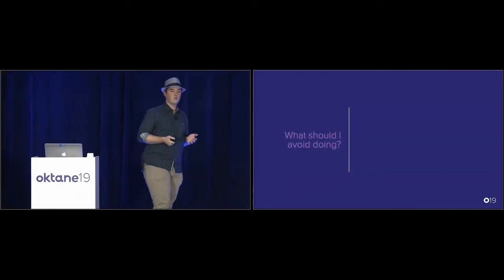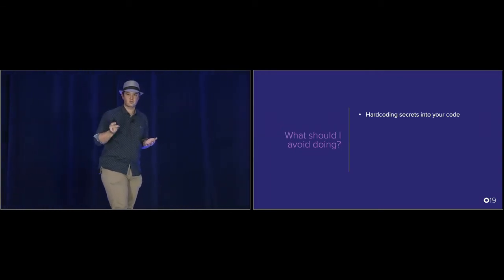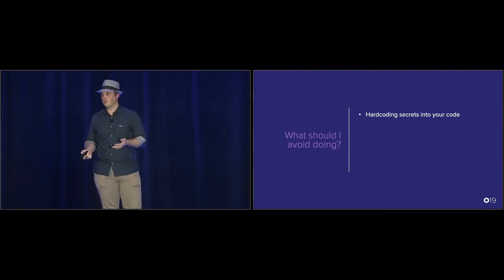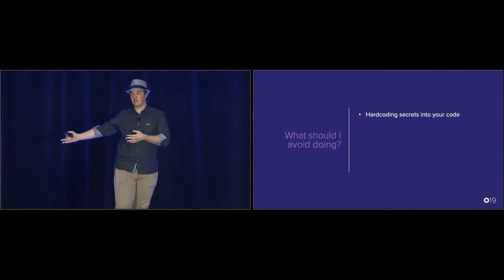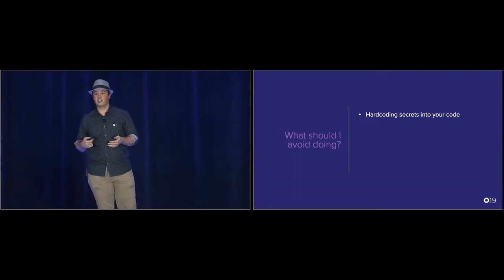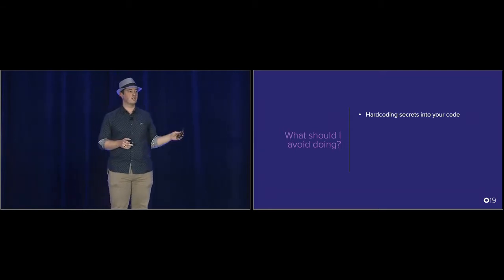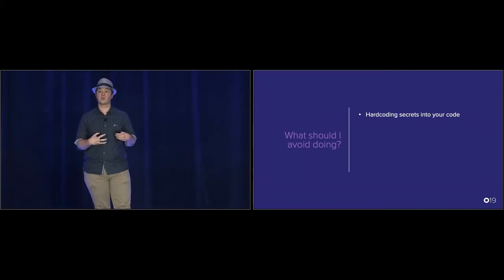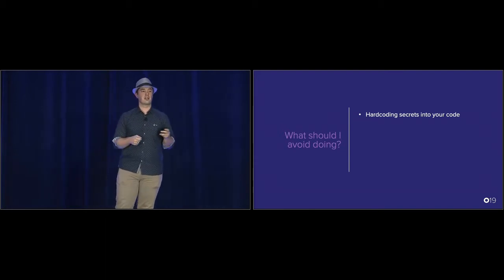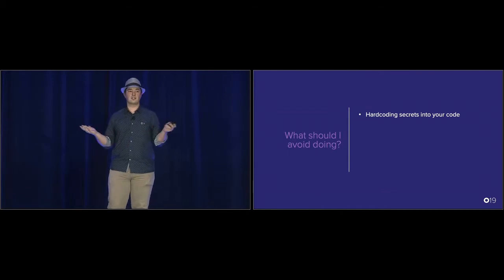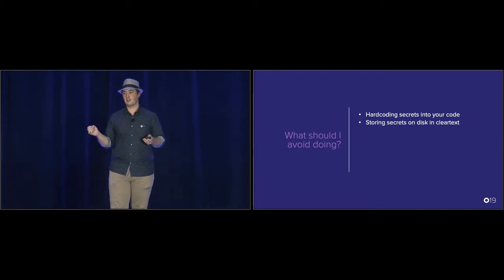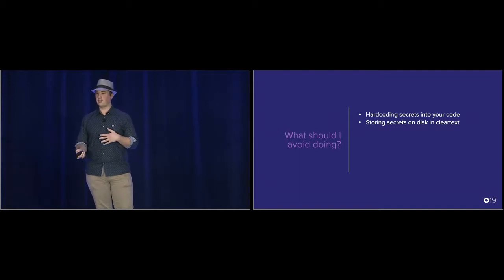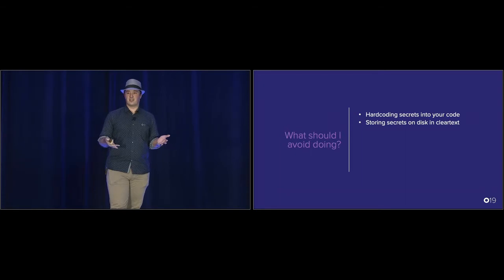What should I avoid? First, and I see this surprisingly often: never hard code secrets in your code. Your code is deployed to an OS that has to execute it, which means by definition anything in your code can be reverse compiled — otherwise Android or iOS would not be able to execute it. Even if you obfuscate, it's always possible to reverse compile, so somebody can always find those secrets. As soon as a secret is lost, it's not a secret and has no value. Second, don't store anything on disk that's a secret in clear text.